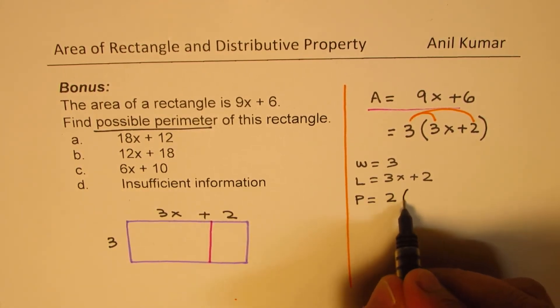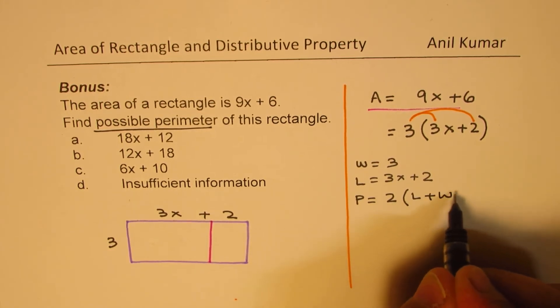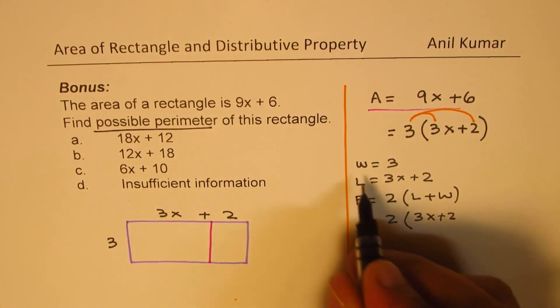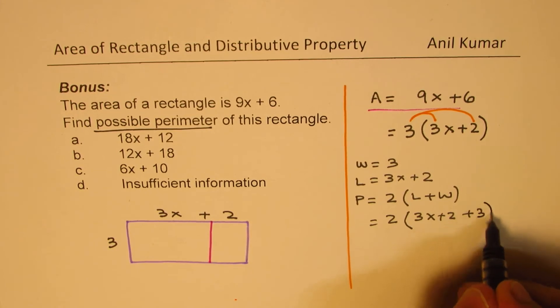Perimeter is 2 times (length + width). So let's add them up and multiply by 2. Length is 3x + 2, and we're going to add 3, the width, to it.